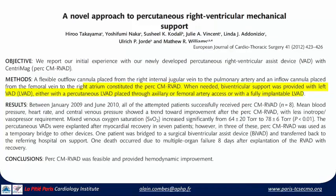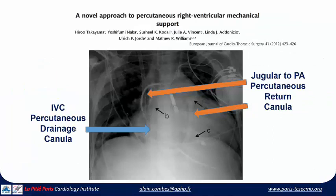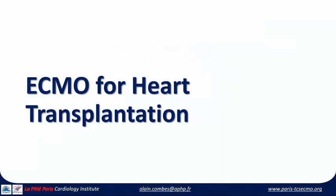A second solution is fully percutaneous using the same strategy for drainage — the tip in the right atrium — and for reinjection, a catheter or cannula is passed from the jugular vein into the pulmonary artery, entirely percutaneous. There is also another solution: a single cannula called the Protek Duo, which may be used for RV support.